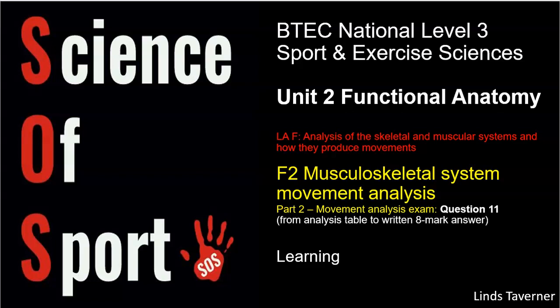Hello, this Science of Sport video is part of BTEC Sport and Exercise Sciences Unit 2 Functional Anatomy. We're looking specifically at Learning Aim F, where you are required to analyse how we produce movement and the connection between the skeletal and muscular systems. We're particularly looking at Part 2 today, which is about Question 11. In the first video, Part 1, I tried to illustrate the differences between Question 11, the 8-mark questions, and Question 12, the 14-mark questions. This one specifically looks at Question 11 only and tries to help you interpret the questions, prepare for them, make an analysis table, and ultimately write a good quality 8-mark answer.